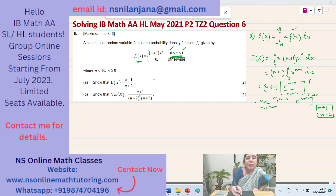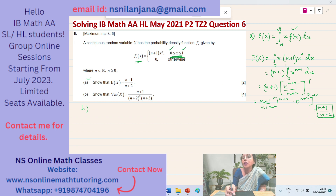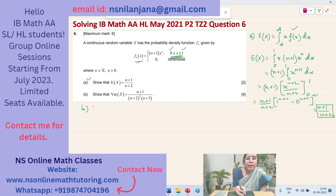Coming to subpart B: show that the variance of this continuous random variable x is equal to (n+1) over (n+2) squared times (n+3). It contains 4 marks. These are very simple questions — the only thing is you either have to memorize these formulas or select the formula from the formula booklet and apply it. So first of all, let me write the formula for variance.